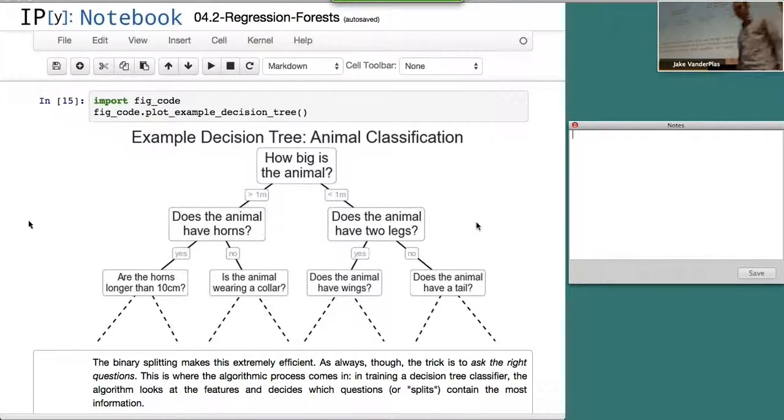So what a decision tree does, then, is it takes our data and applies this sort of binary splitting process. But a decision tree and machine learning, the trick is asking the right questions. If we constructed this tree and we asked silly questions, like is our animal greater than 1,000 meters? No. Is our animal greater than 900 meters? No. Is it greater than 800 meters? No. We could ask a lot of questions and we wouldn't gain any insight. But if we ask the right questions, we gain a lot of insight. And a decision tree acts along this same sort of thing.